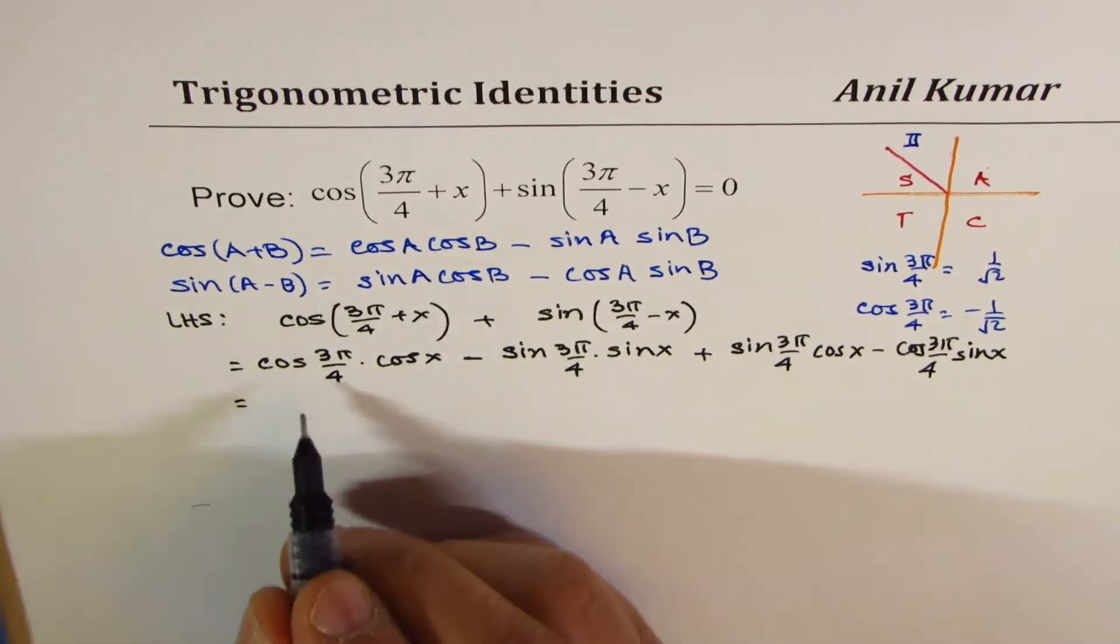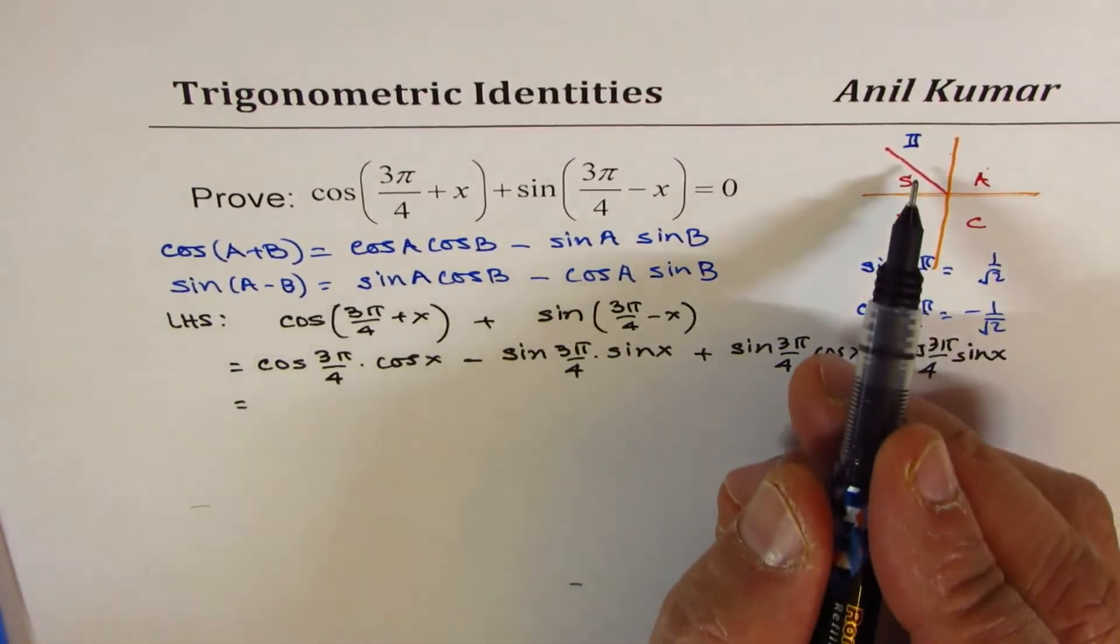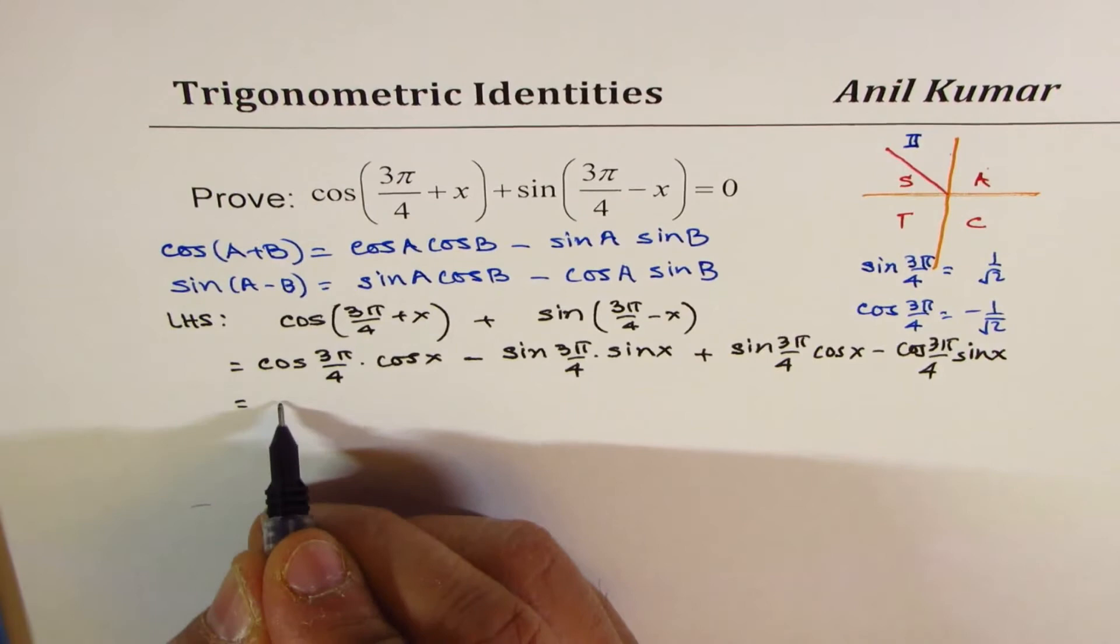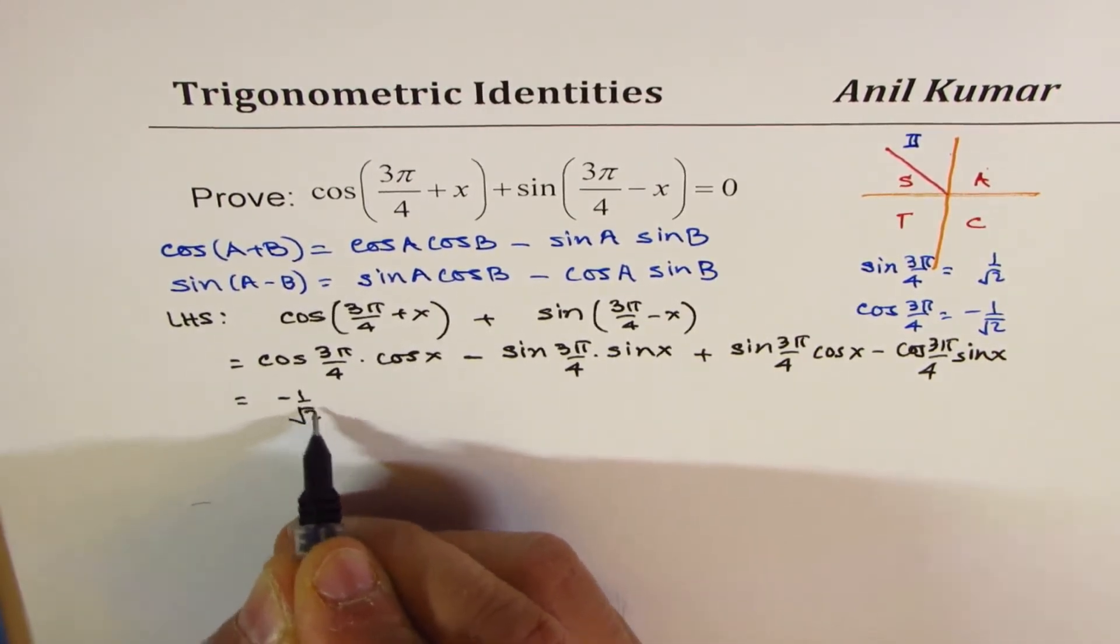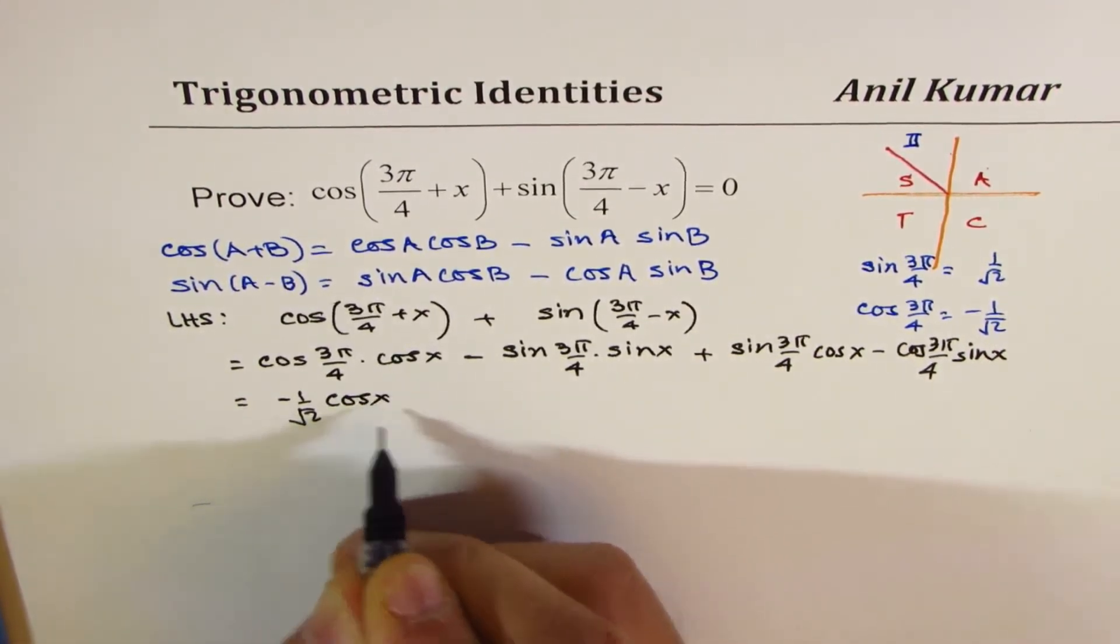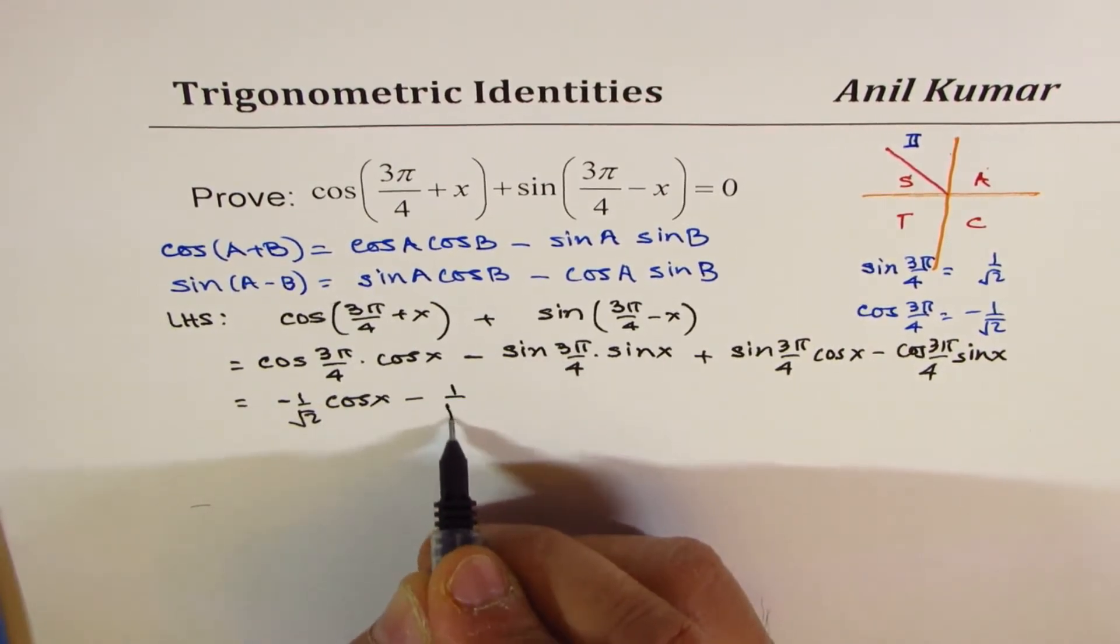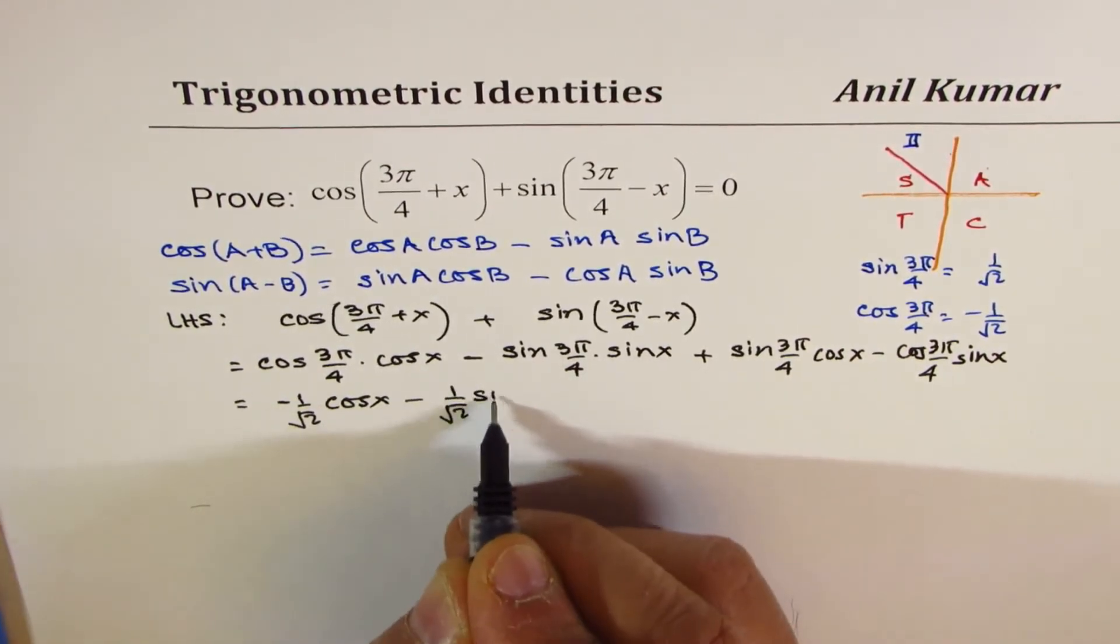Now, we'll substitute the value. Cos(3π/4), which in quadrant 2 should be negative, so it is -1/√2 of cos(x) minus sin is positive, so we get 1/√2 sin(x).